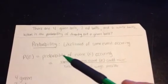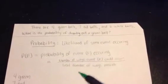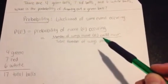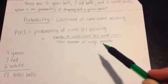P of E would be equal to the probability of event E occurring. And probability can be measured by the number of ways event E could occur, divided by the total number of ways possible.